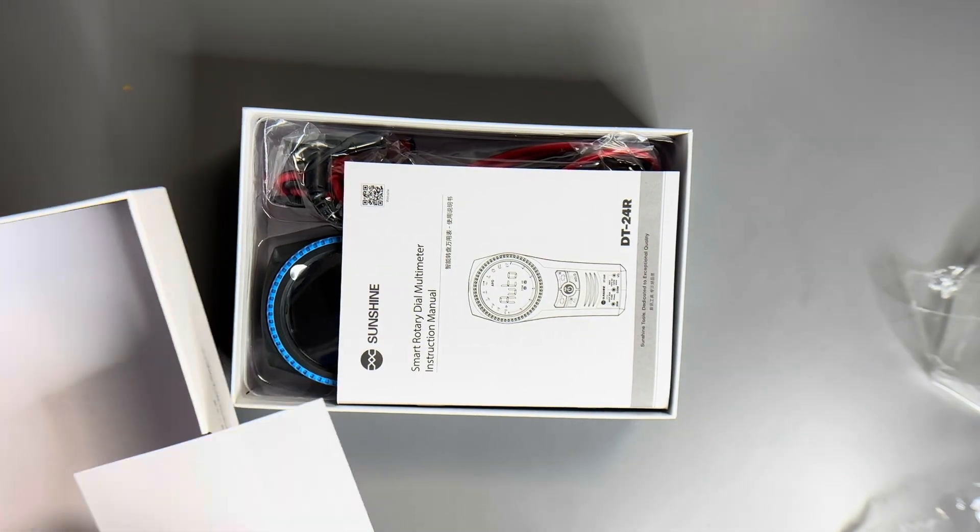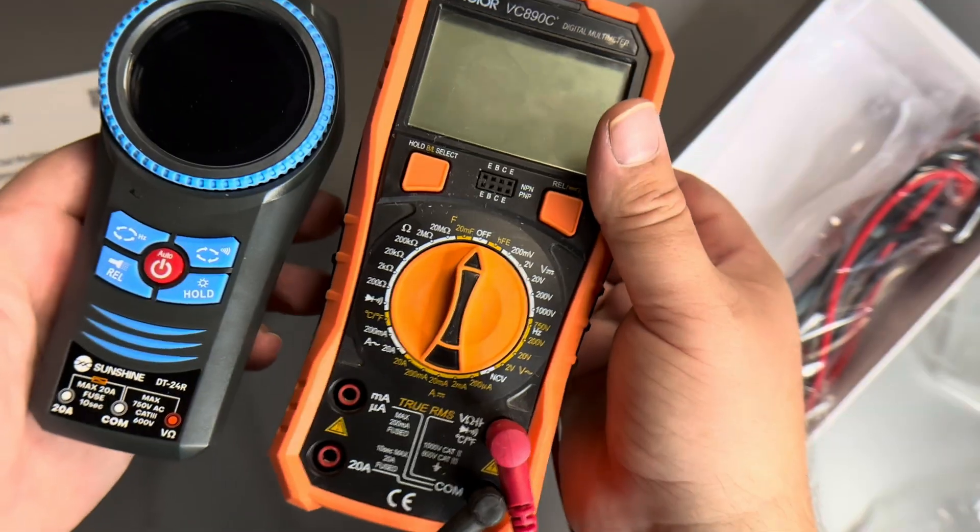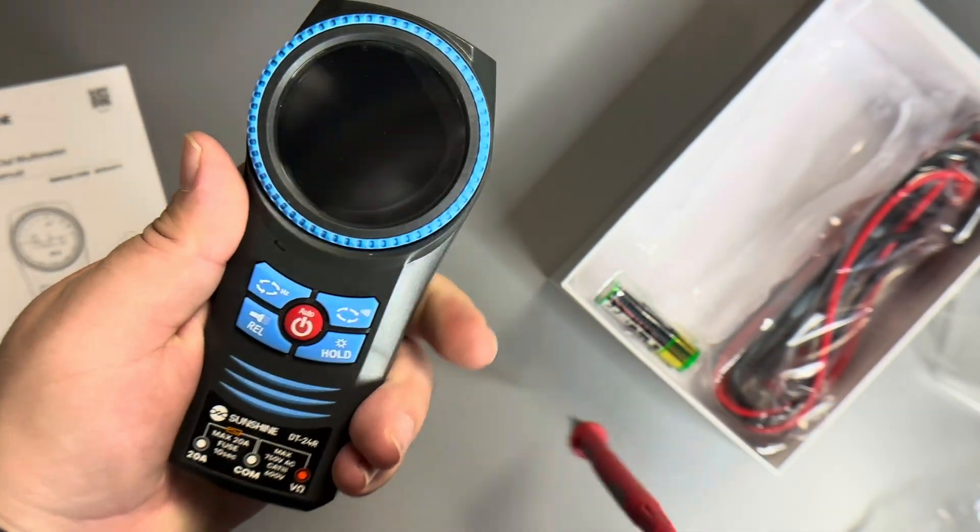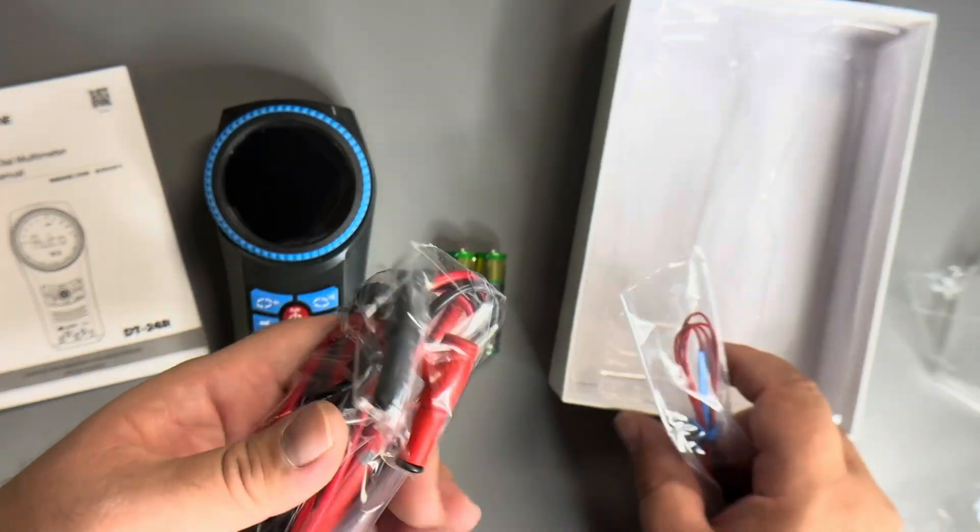Our first look at it, we've got our instruction manual. I'm already liking the size. My other one is big and bulky, and this fits nicely in the hand. We've got some batteries, and we've got a few different types of leads.